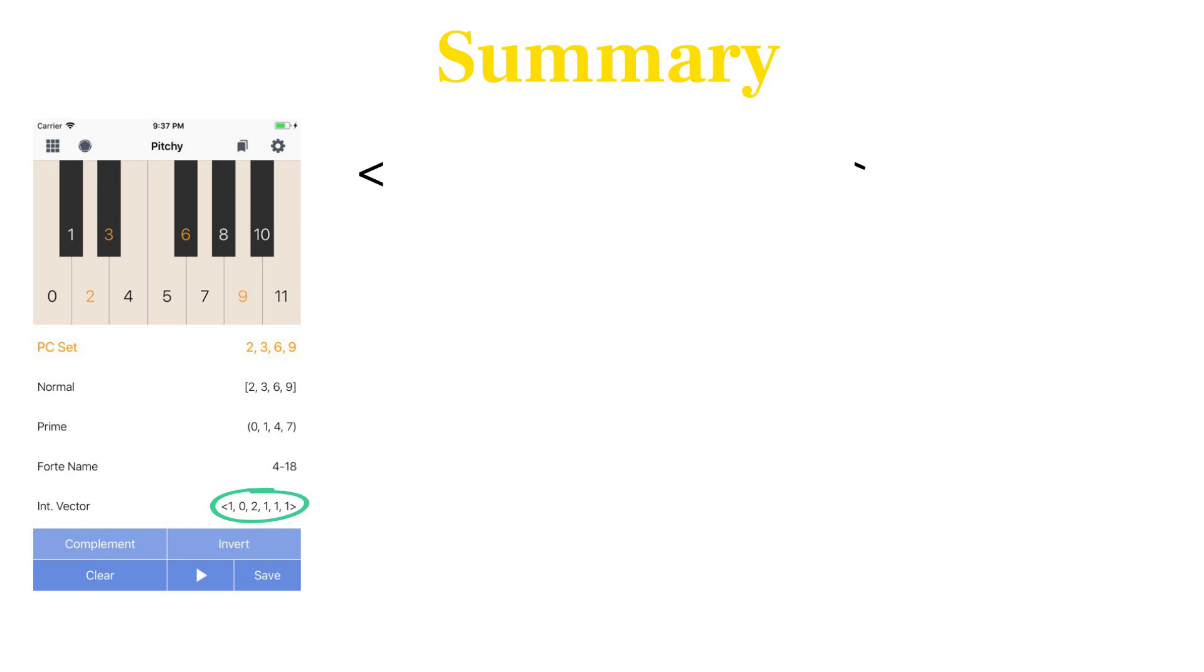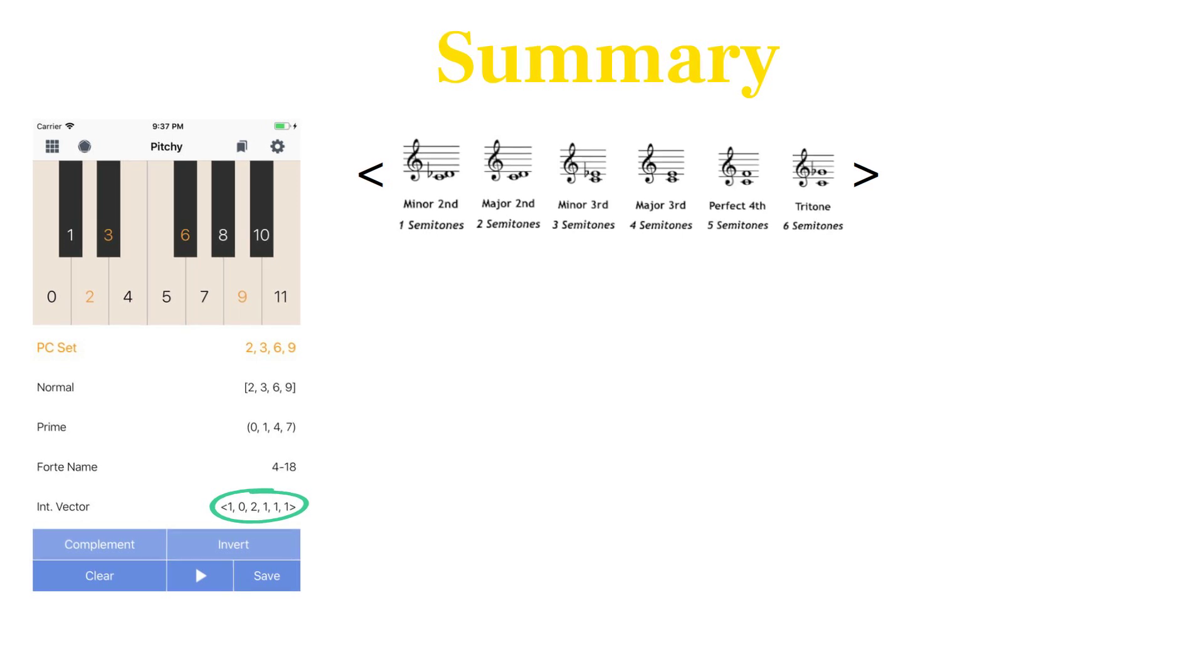The interval pattern shows us the number of primary intervals present from left to right starting with half steps, ending with tritones.